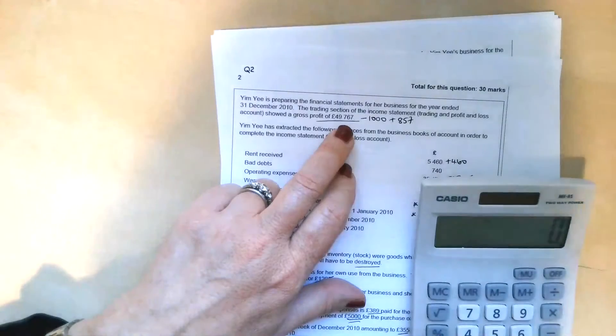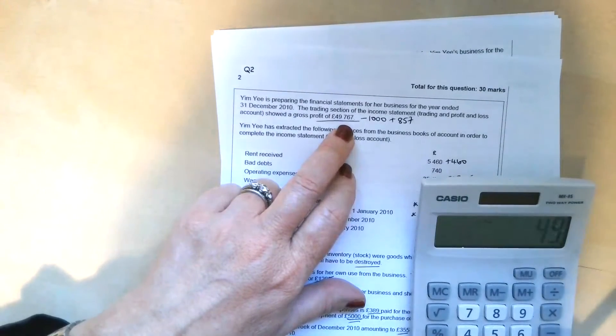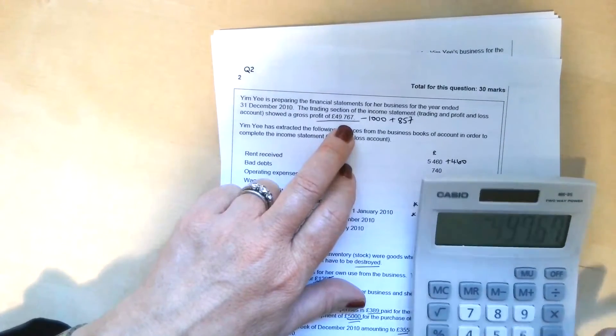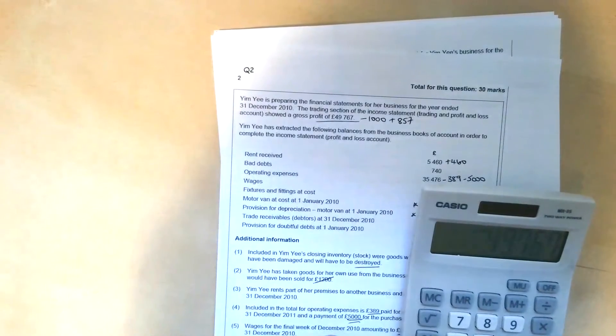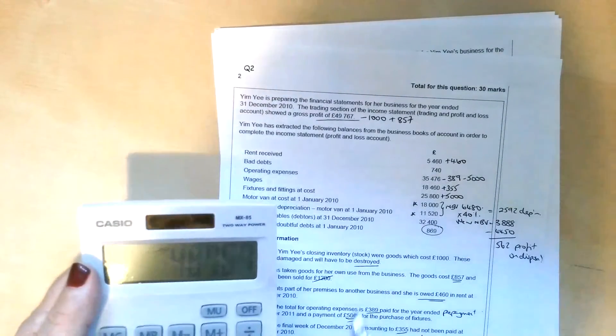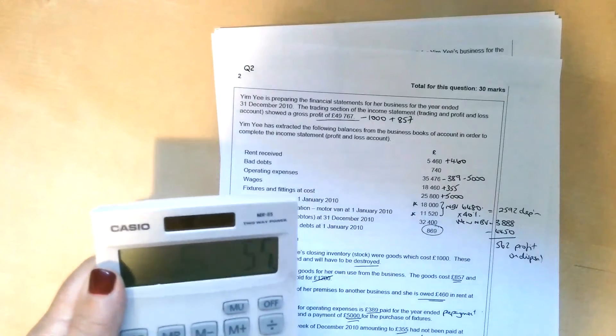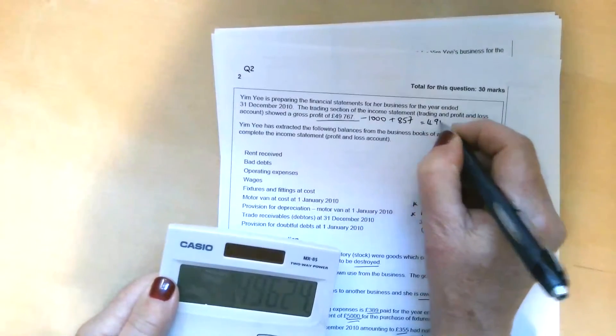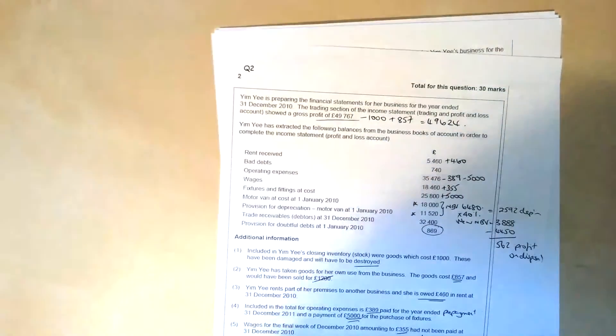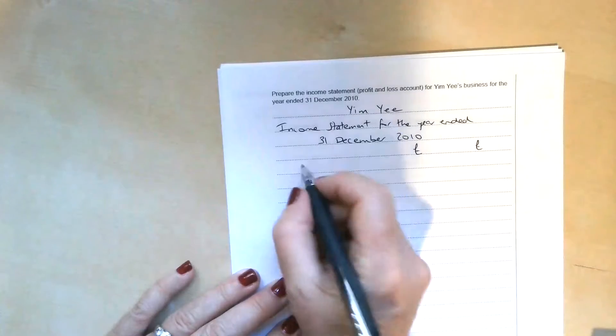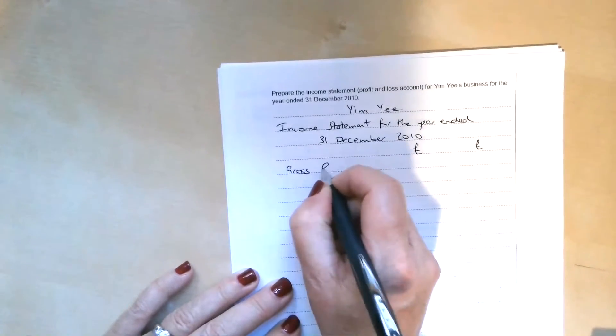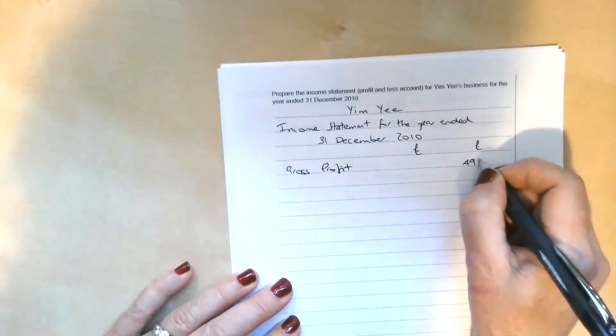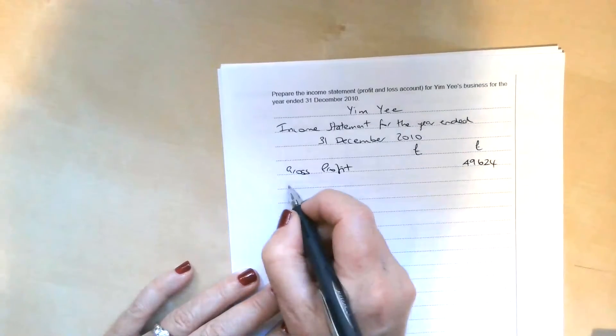If you remember, we're starting with gross profit here. So the original gross profit was a figure of £49,767. We're taking off £1,000 for that inventory that was going to be destroyed, and we're adding £857 for the goods for own use. So the new gross profit figure is going to be £49,624. So we can start with that figure. Let's put that in here. Gross profit, £49,624.